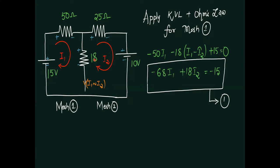Observe the circuit. In order to solve this, I would like to apply mesh analysis. This one is mesh one and this one is mesh two. The current in mesh one is I1 and in mesh two is I2. The current travelling across the 50 ohms is I1. Current flowing across 18 ohms is the difference of these two currents, as it is a branch between two meshes. The 25 ohms carries I2 current.